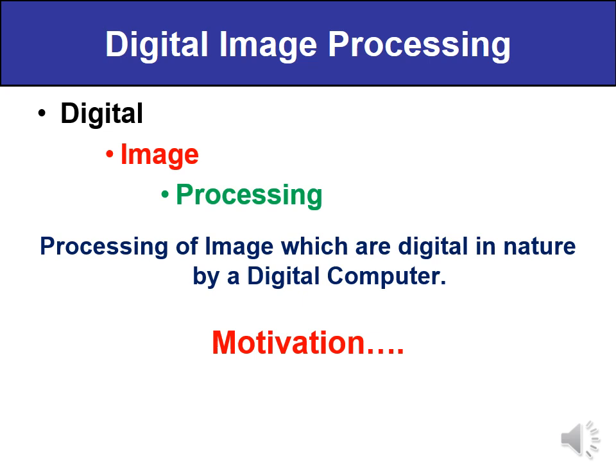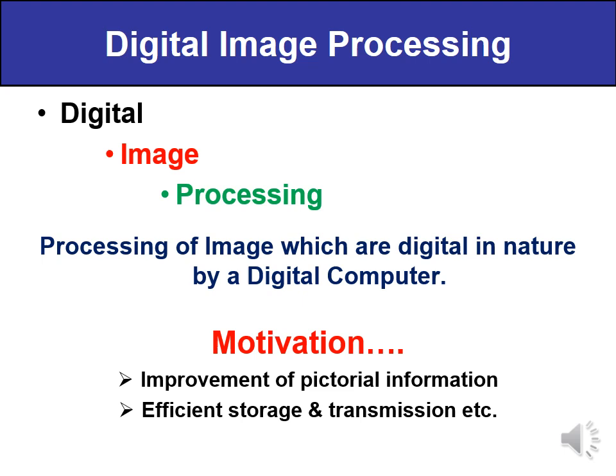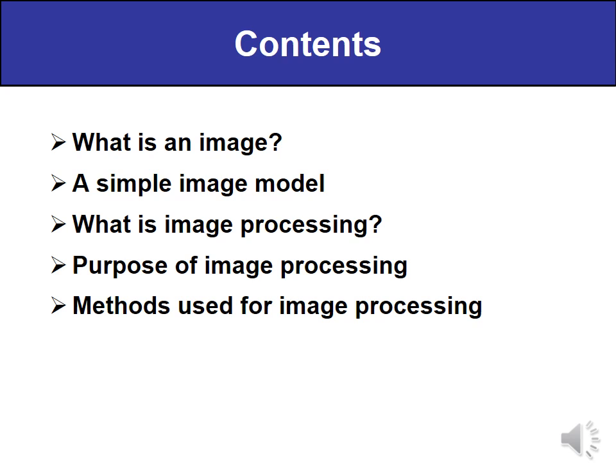What is the motivation behind digital image processing? Images which are digital in nature have various advantages. They give us improvement of pictorial information, so it is clearly visual and information can be extracted very easily. For digital images, transmission is very fast and it gives us efficient storage. Security is also very high. You will study about what is a digital image, a simple image model, what is image processing, its purpose, and the methods used.